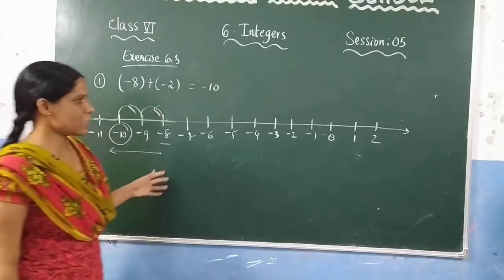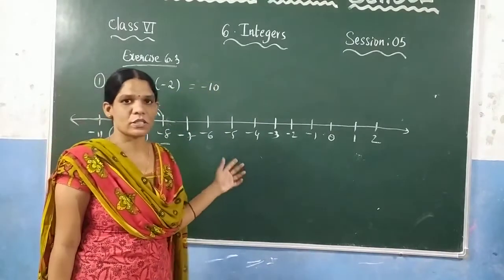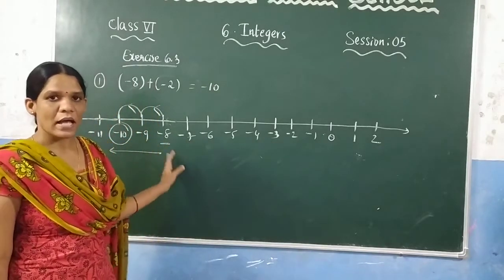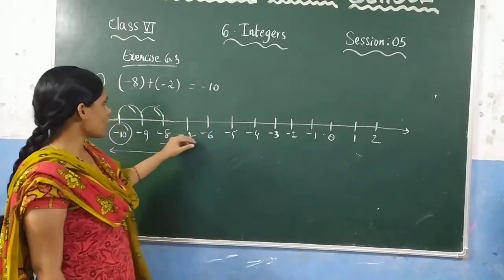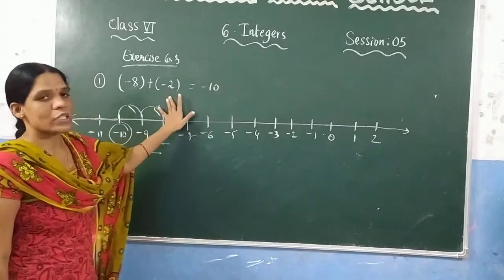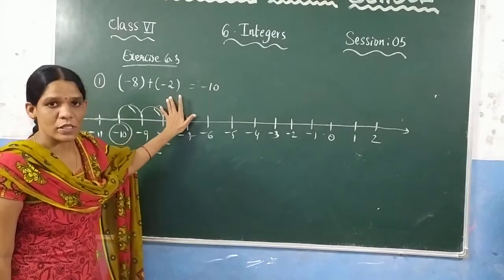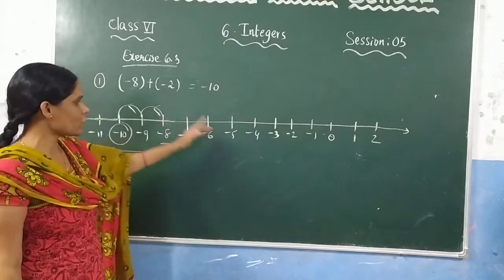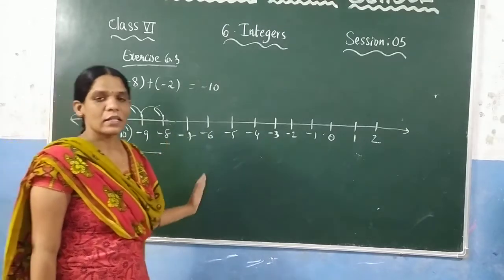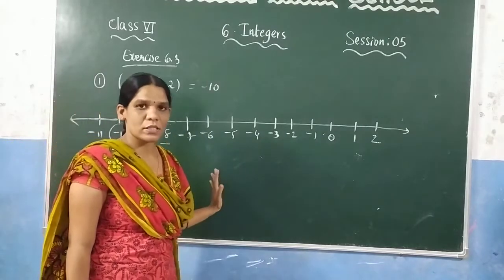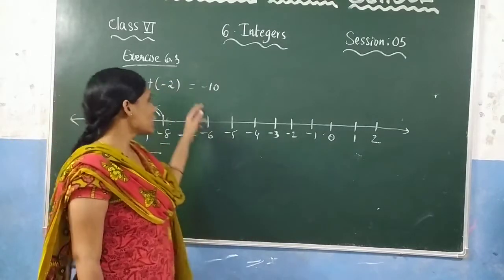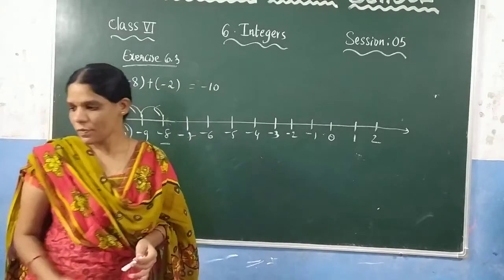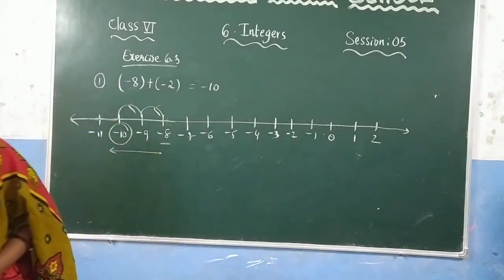That is very easy. First check what the first number is, go to that number, then check whether you are adding a positive or negative number. If negative, go left; if positive, go right. Count the steps and you will get the answer.